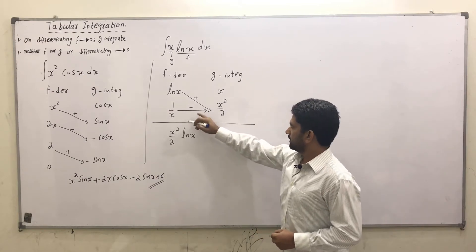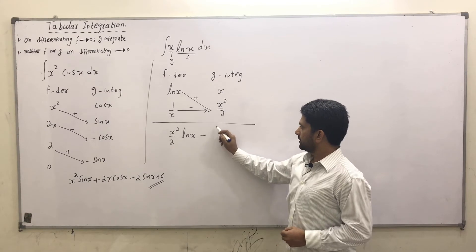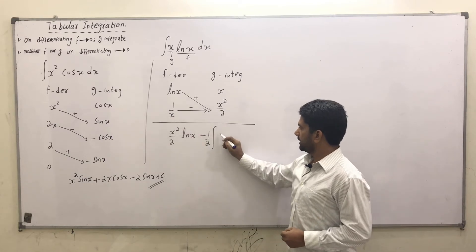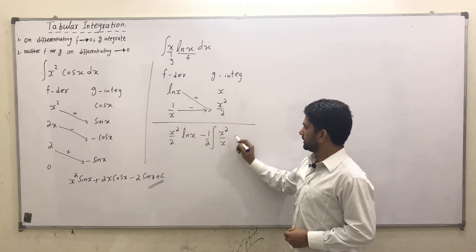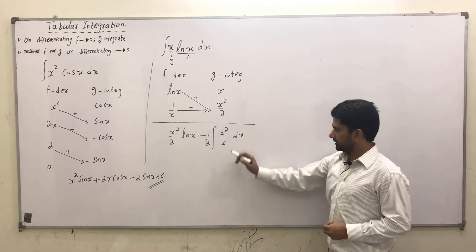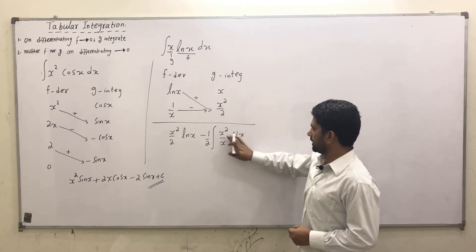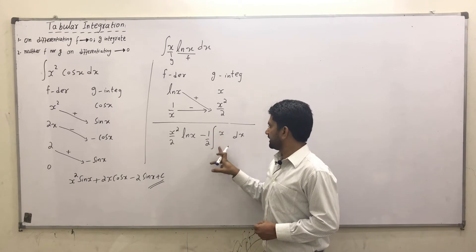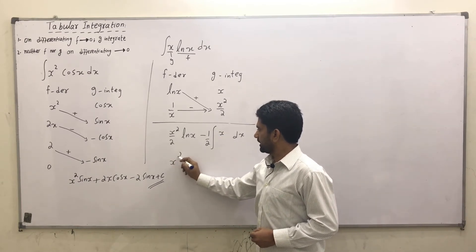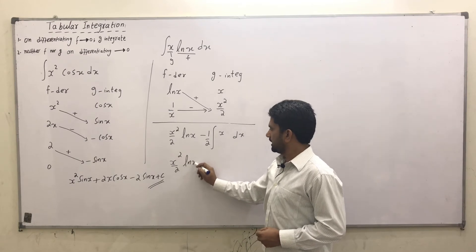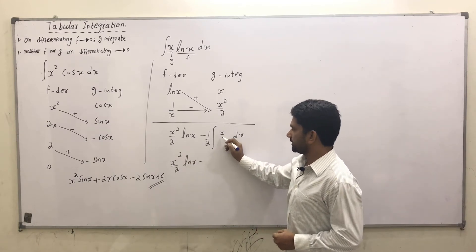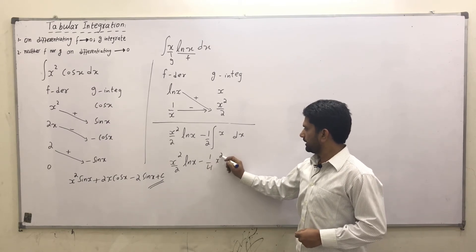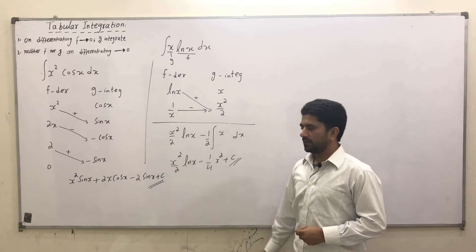We draw a horizontal line. The first sign is positive, the next is minus. Multiplying: we get positive (x²/2) · ln(x), then minus the integral of (1/x) · (x²/2) dx, pulling 1/2 outside the integral, leaving x dx inside. The x and one of the x's cancel, leaving only x dx. Integrating x gives x²/2, so we get (1/4)x², plus a constant. This is our required solution.